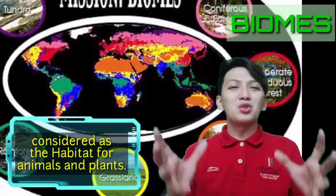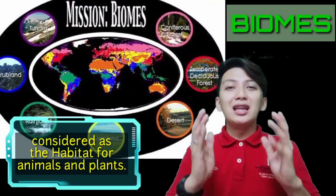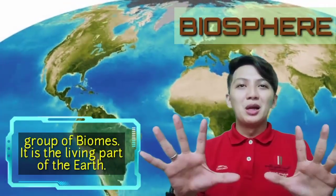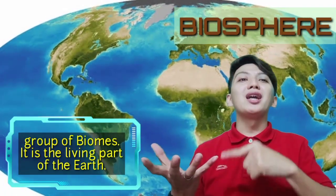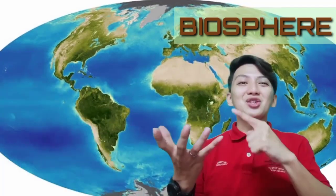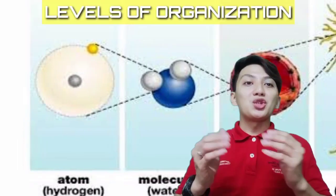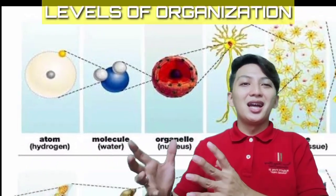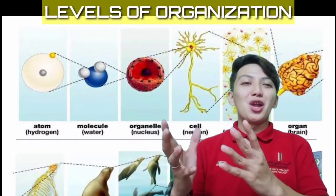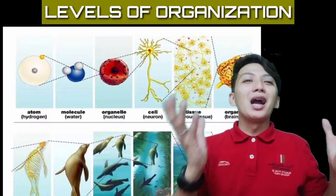When ecosystems and biomes are grouped together, we can find the biggest part where living organisms can be found — number ten: the biosphere. The biosphere is the part of the earth that contains all living organisms. So to recap, it started from atoms, to molecules, to organelles, to cell, to tissue, to organ, to organ system, then organism, population, community, ecosystem, and biomes, and finally the biosphere.